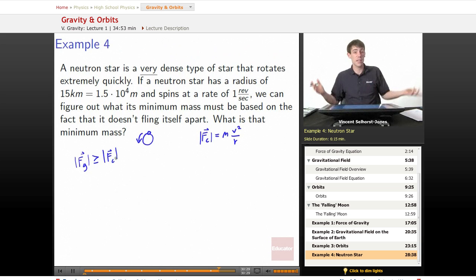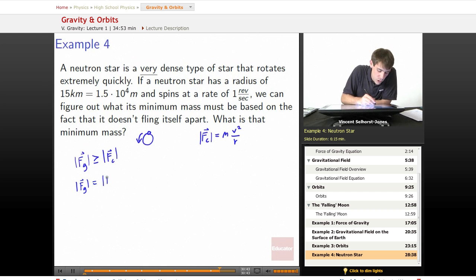Otherwise, if the force of gravity is less than the centripetal force, the entire neutron star will just explode out every which way, and we won't have a neutron star anymore. So what will that minimum mass be? Let's look at the minimum case which is going to be when force of gravity is equal to the centripetal force.